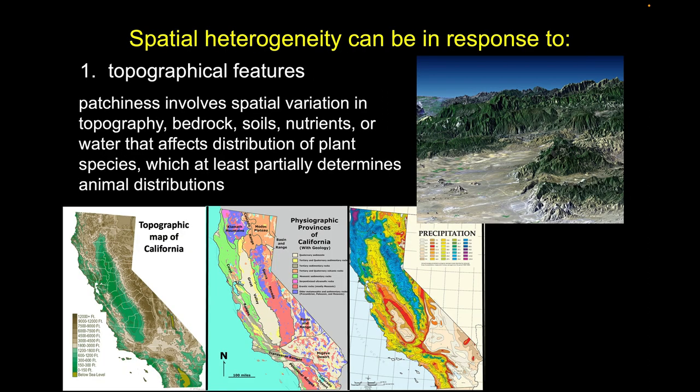With topographical features, the example of how we get heterogeneity in space from topography is pretty straightforward and probably obvious to just about everybody. We always start with the abiotic environment — the abiotic conditions, the non-living conditions.